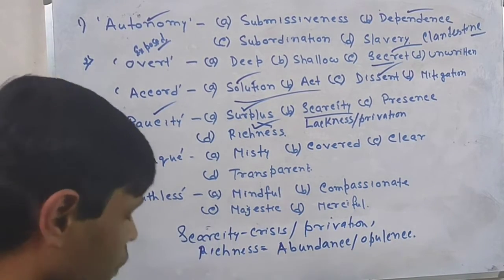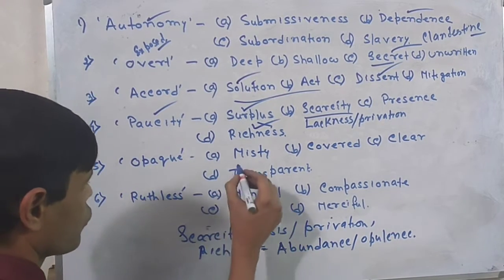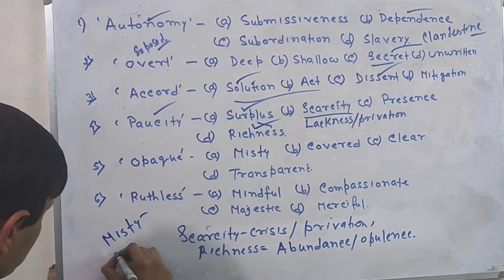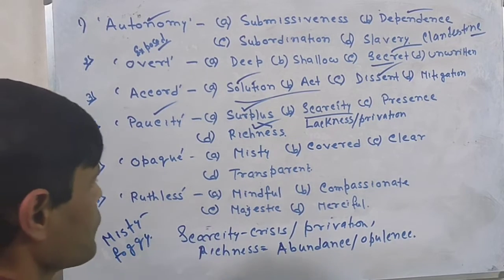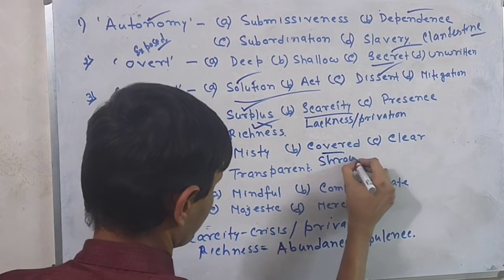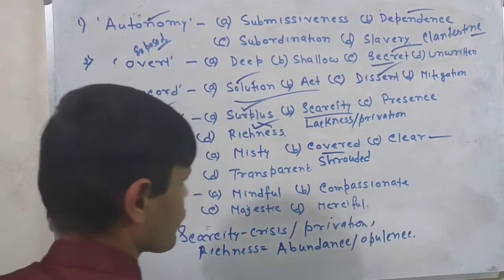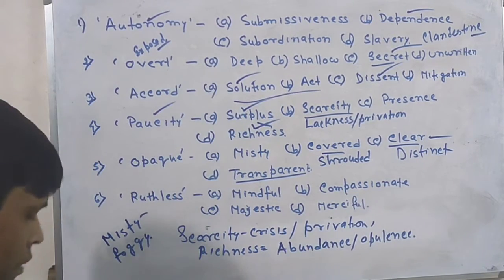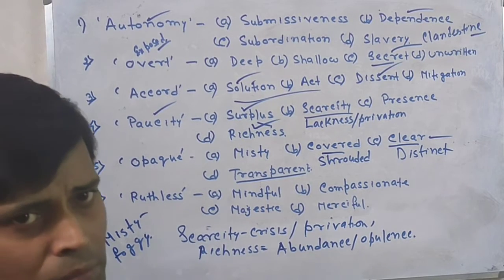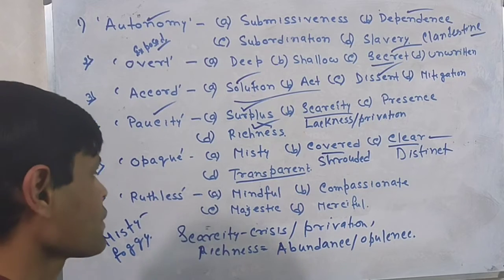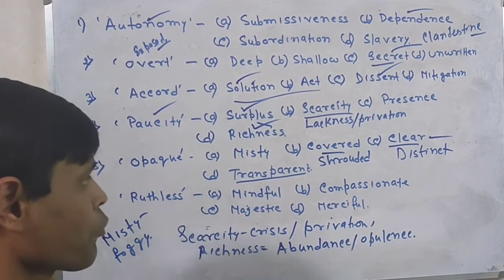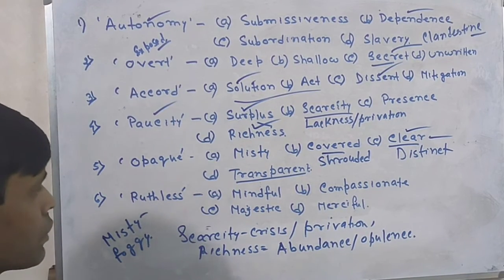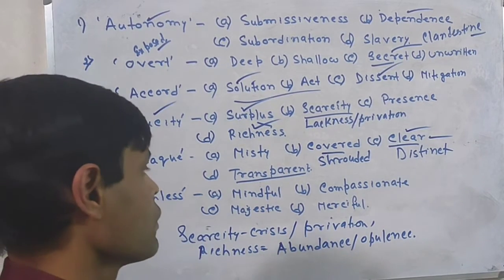The next question is opaque. There are four options: misty, covert, clear, and transparent. Misty means foggy. Covert means shrouded. Clear means distinct. Transparent means very distinct. So opaque means greatly hazy — the haziest. When opaque is in the question, transparent will be the appropriate answer, but in the absence of transparent you can select clear.